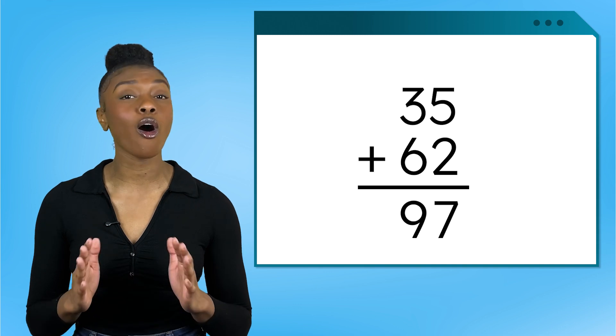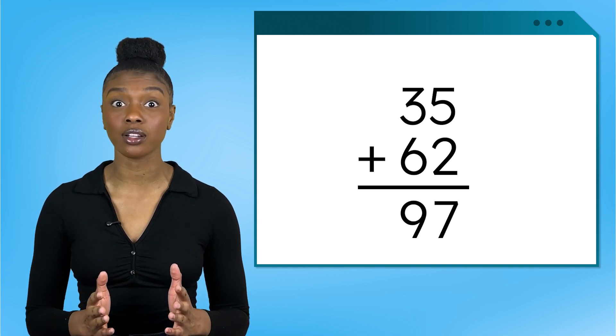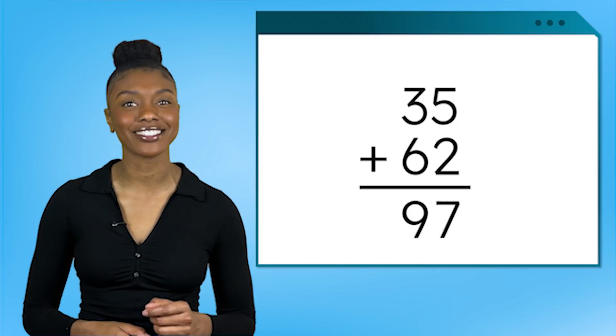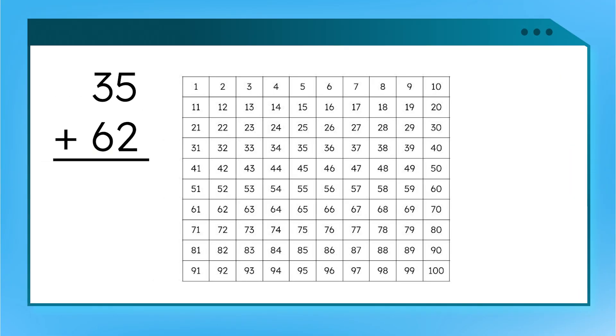In math, it's always a good idea to check our work. Let's pull out our 100 chart to make sure we got this right. 62 is our bigger number, so we'll start there. Can you move down and across to add? We can move down 3 boxes to add 3 10s or 30. Then, we can go across 5 boxes to add 5 1s. We landed on 97.